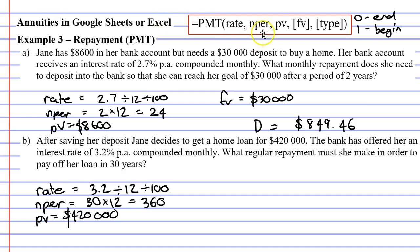We've got our future value. Whenever it's a loan that you're paying off, your future value is going to be $0, because by the end of the loan, you want to owe nothing. When you look at the question, there's nothing that talks about making repayments at the beginning or end of the month, so we just assume it's at the end of the month. We're going to use type 0.